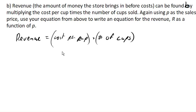Makes sense, right? If I sell each cup for $3 and I sell 10 cups, I'm going to make $30. We multiply the cost per cup times the number of cups.